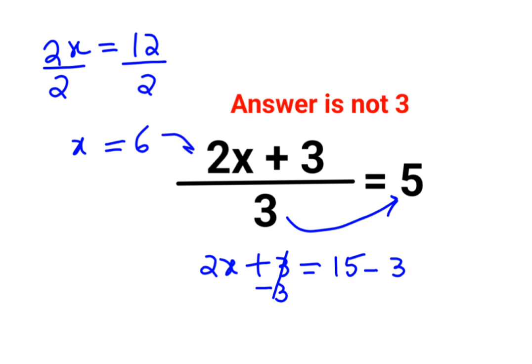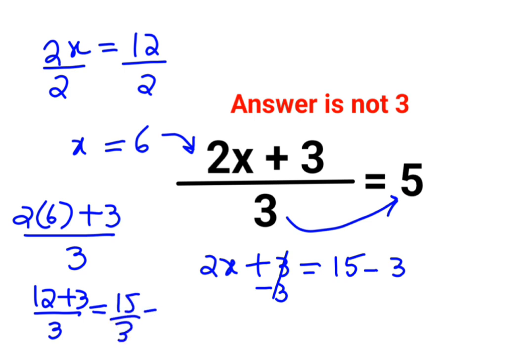Now let's put it back in the question. So we have 2 multiplied by 6 plus 3 divided by 3. So 2 multiplied by 6 is 12 plus 3 divided by 3. This is basically 15 divided by 3. Answer is 5, which is your RHS. So here we can say the answer for this question is x equals to 6.